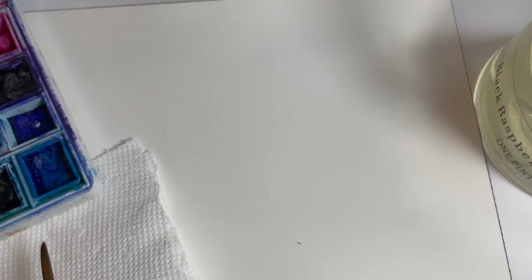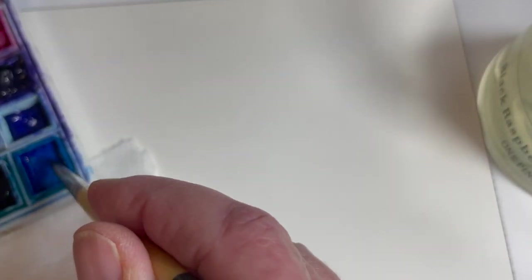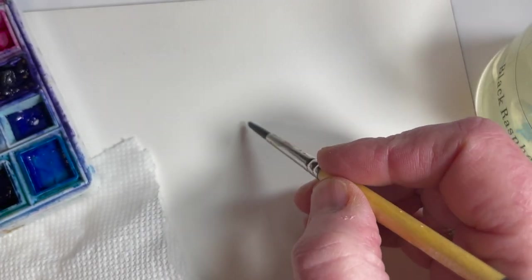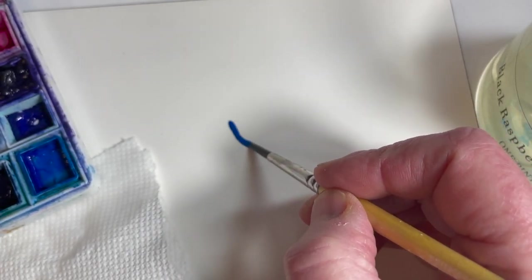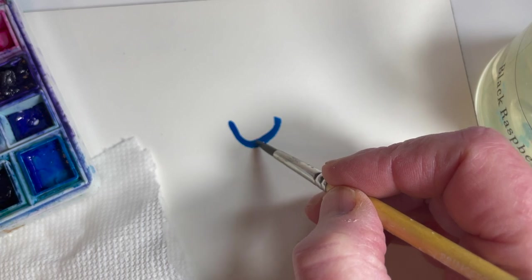So begin by activating your watercolors. I'm just spraying some clean water onto my palette. I'm getting my brush wet and I'm going to pick up some paint, and I want this to be pretty wet. Then this is so simple: I'm just going to make a big U shape. It doesn't have to be perfect, just a big open U shape.